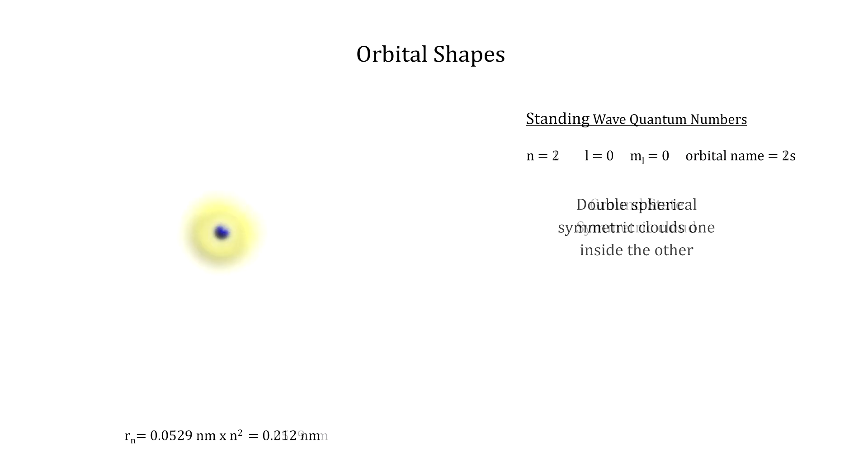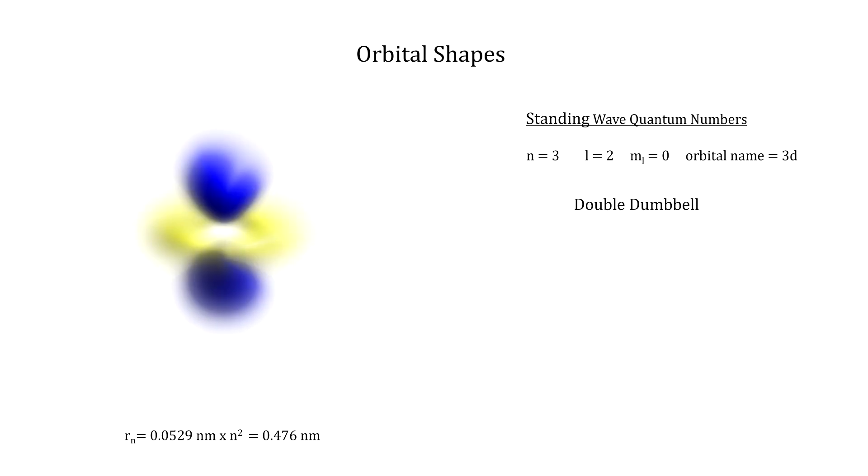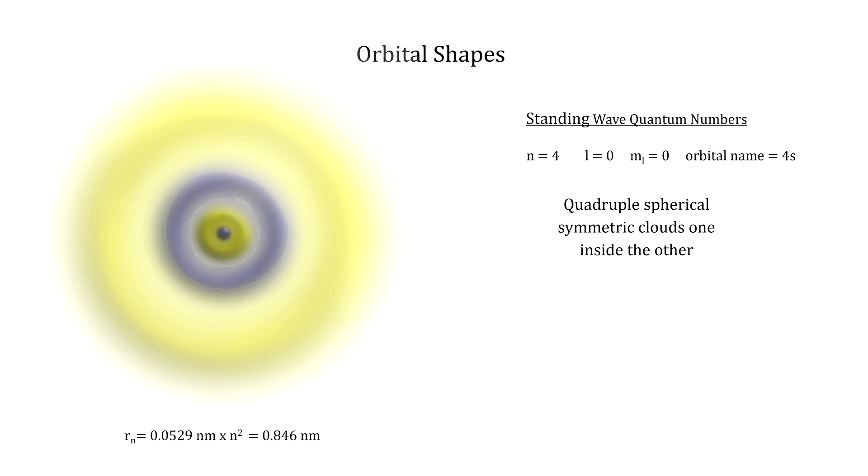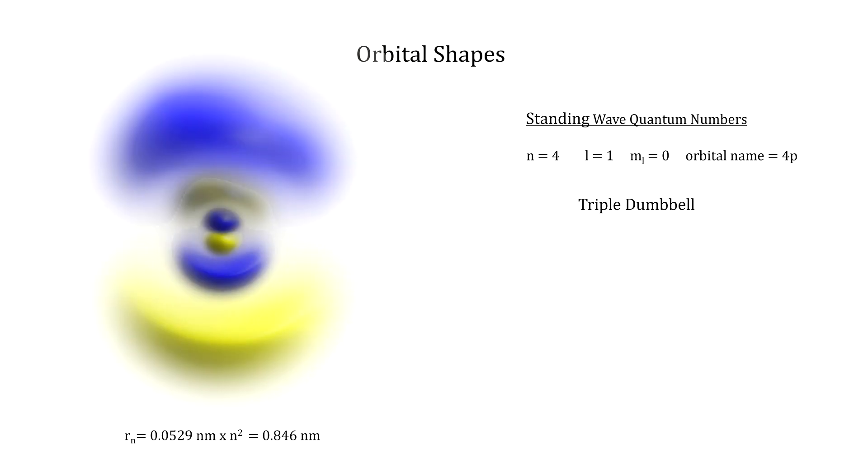Here are some images showing the shape and size of orbitals. N determines the size of the orbital. L determines the shape of the orbital. M sub-L determines the orientation of the orbital. And spin limits the number of electrons in an orbital to just two.